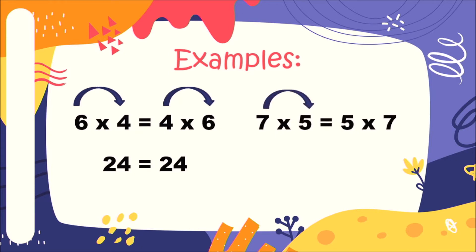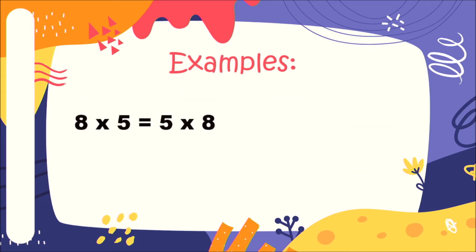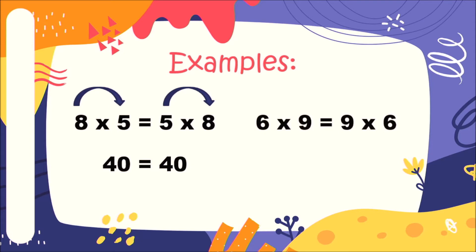Another example: if we have seven times five and we interchange the two factors into five times seven, both products are the same — 35 is equal to 35. Another example: eight times five interchanged to five times eight gives 40 equal to 40. And for the last example, six times nine interchanged to nine times six gives 54 equal to 54. These are all examples of commutative property of multiplication.